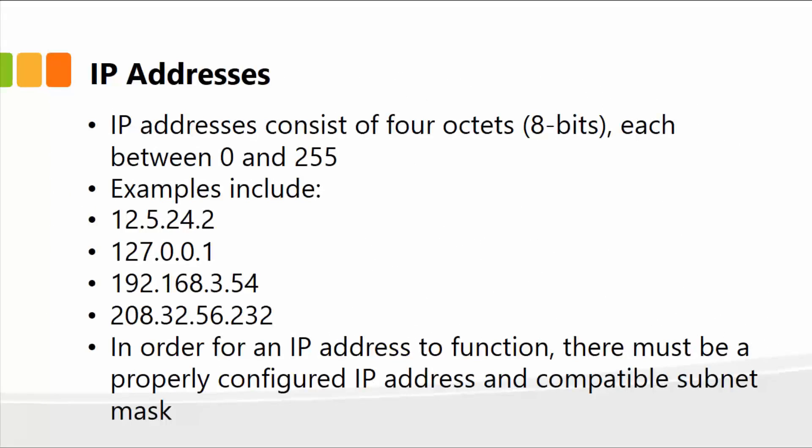Each computer on the network has to have a unique IP address — just like a home address within a subdivision. Your house has a unique number so your physical mail gets delivered to you. IP addresses consist of four octets, 8 bits each, between 0 and 255. For example, 12.5.24.2 or 127.0.0.1, which is also known as the loopback address.